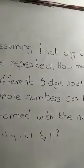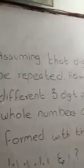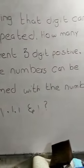Assuming that digits cannot be repeated, how many different 3-digit positive whole numbers can be formed with only 1s? If the unit digit is 1, the tens digit cannot be 1, and the hundreds digit cannot be 1. So no 3-digit number is possible. The answer is zero.